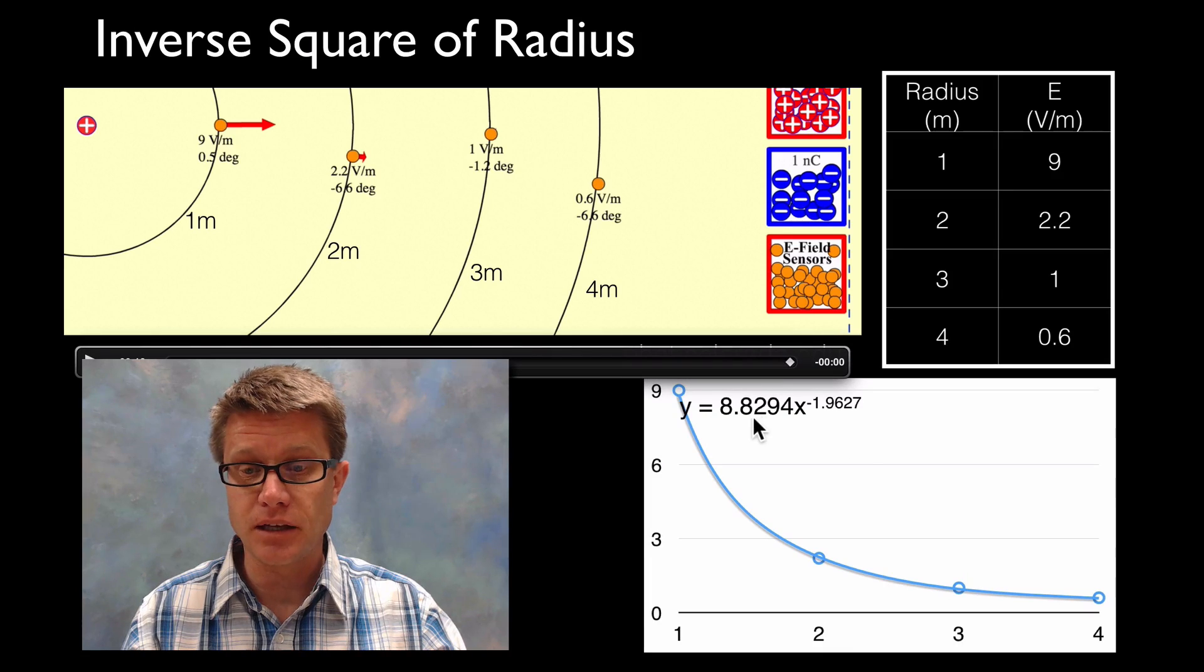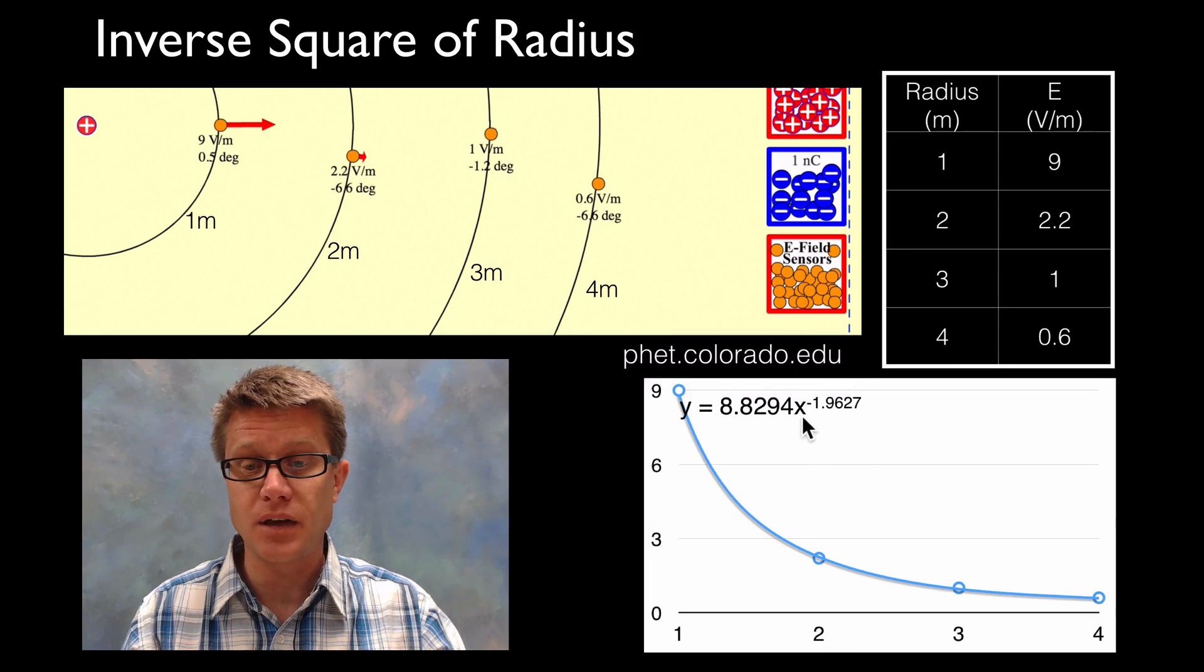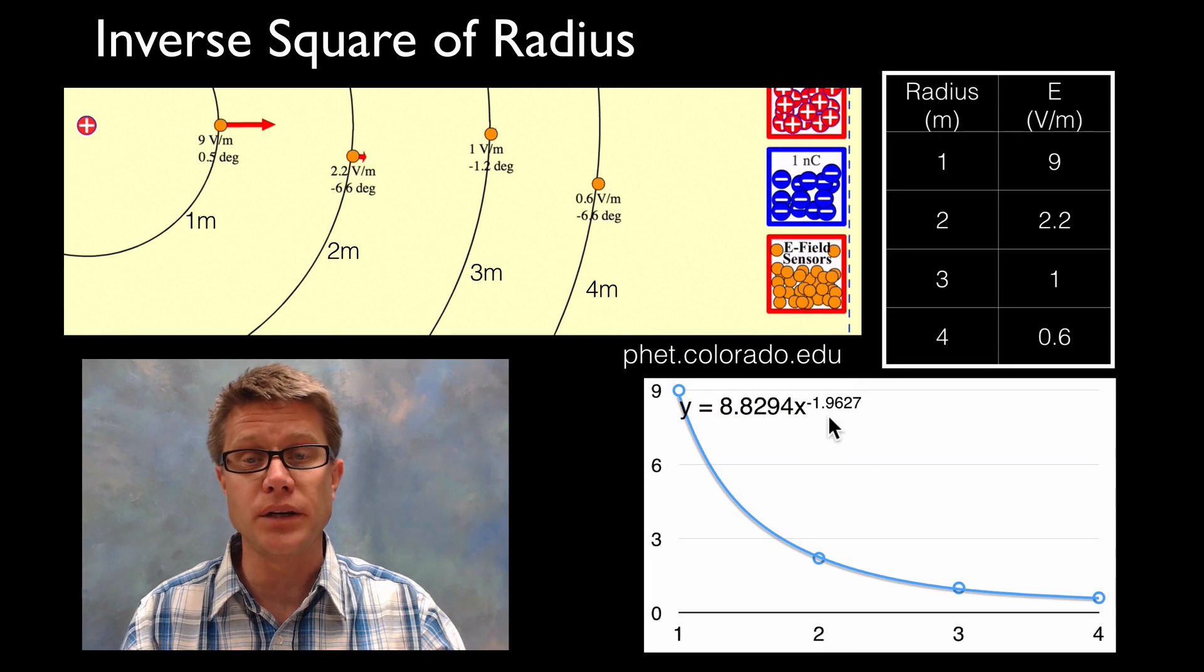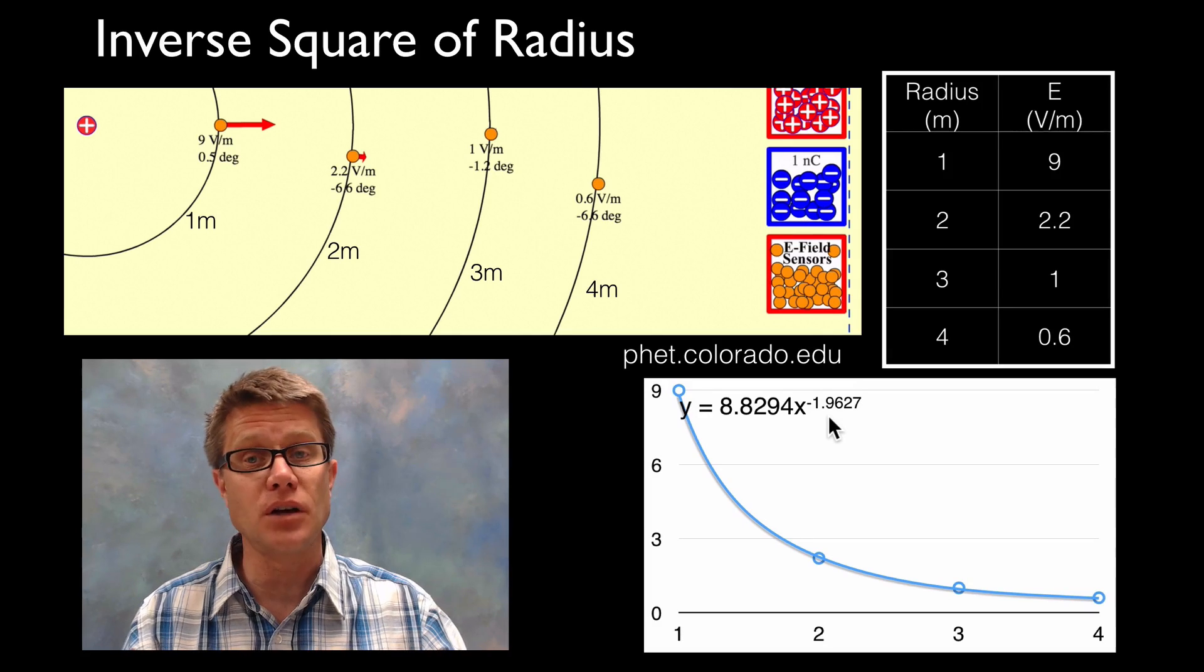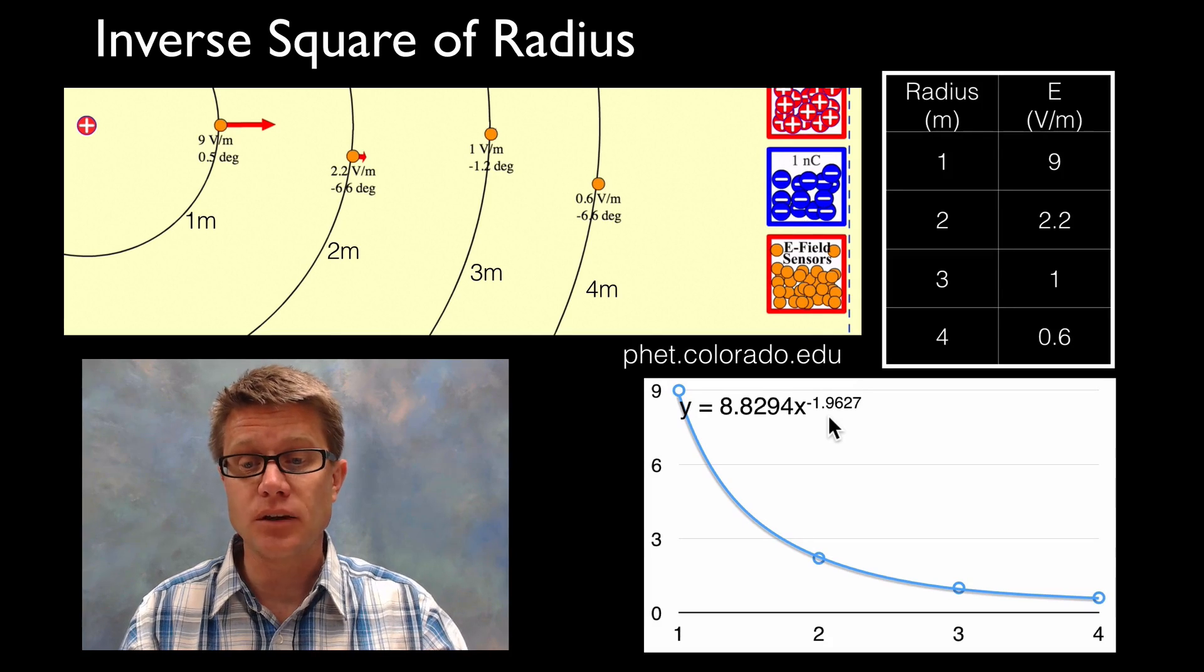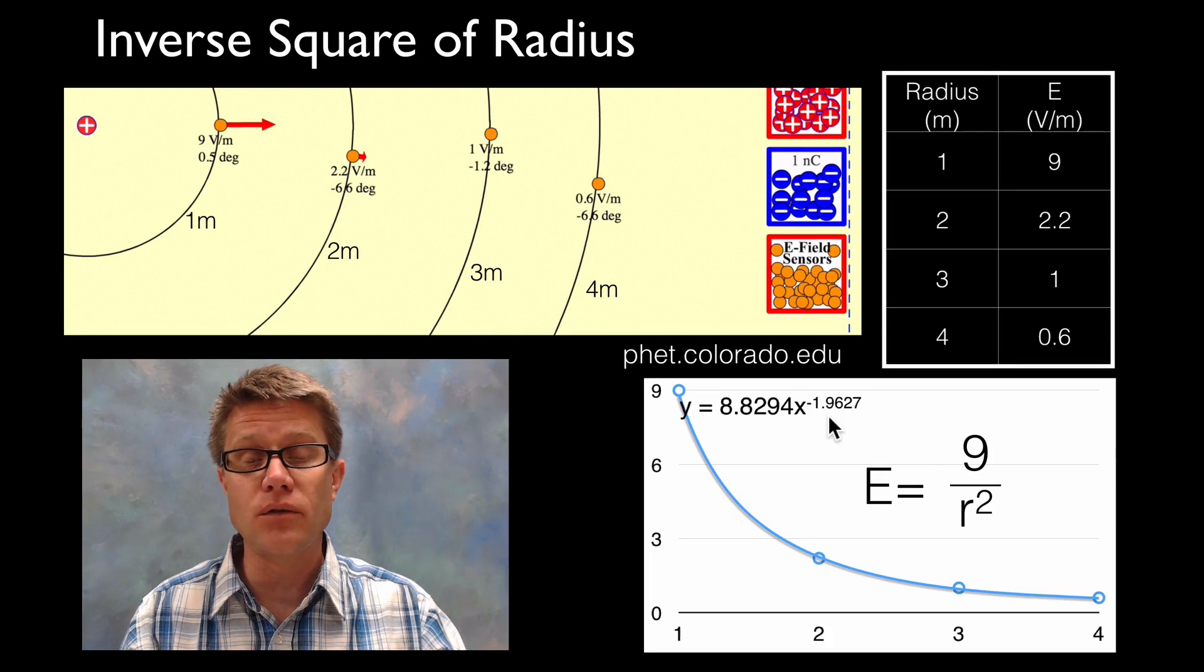Then I do a power regression to try to fit a line to it. And so I got a line that looks like this: 8.8 times x raised to the negative 1.9 power. Now why aren't those whole numbers? It is because I am not including enough significant digits. And so I could round that to 9 over r squared. And so that is going to fit our data.